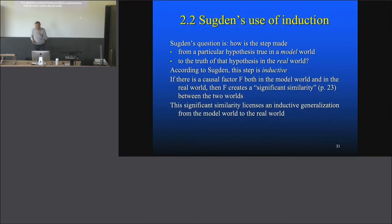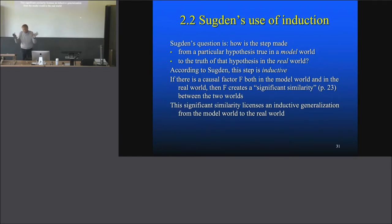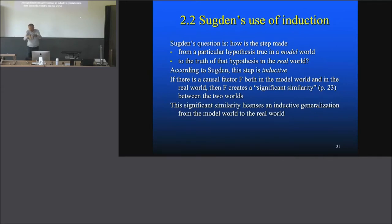Let's look at it in a little more detail. The significant similarity licenses an inductive generalization from the model world to the real world. The argument seems very good. It says: yes, I know it's an inductive step. Inductive steps are risky, and they are only allowed if you find something that justifies that they all belong to one natural kind — that is justified if you find some essential property that all of them have, showing they really are one natural kind — and therefore you can, from one subset, go to another subset and make an inductive inference.